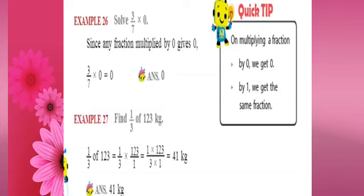The next example: solve 3 by 7 into 0. You already know from multiplication properties that any number multiplied by 0 gives the product as 0. That applies for fractions also — any fraction multiplied by 0 gives 0 as the product. Similarly, any fraction multiplied by 1 gives the same fraction as the product. So 3 by 7 multiplied by 0 is equal to 0.